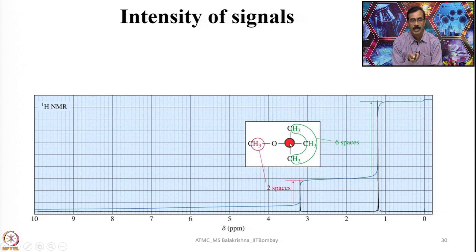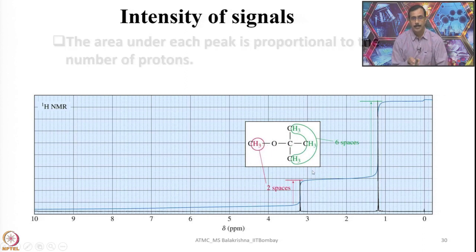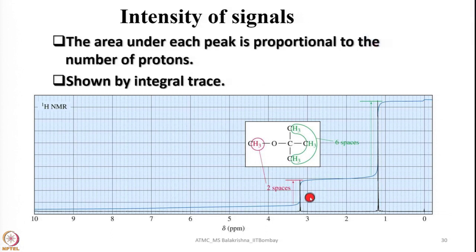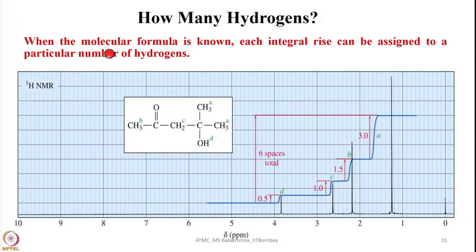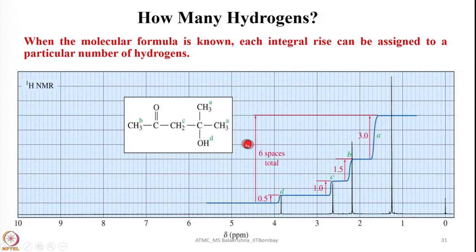The intensity of signals is shown by the integral trace, which gives the number of equivalent protons present in a given molecule. When the molecular formula is known, each integral trace can be assigned to a particular number of hydrogens. For a molecule with four types of protons in a ratio of 1:2:3:6 (or 0.5:1:1.5:3), we get four signals that nicely tell us how many similar protons are in each group, helping to build the correct structure.